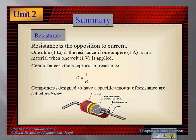Now we want to talk about resistance. Resistance is the opposition to current. If you have too much current, as you noticed in the simulations, it can set your circuit on fire. We often have to insert some resistance into our circuit to back down the amount of current so we don't overpower the circuit. One ohm is the resistance if one amp is in a material when one volt is applied. Conductance is the reciprocal of resistance — you'll learn more about conductance if you take digital electronics.